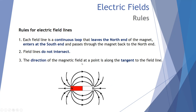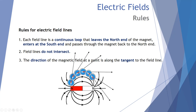Third rule: the direction of the magnetic field at a point is along the tangent to the field line. At any point on a field line, a compass's north pole travels tangent to that line. As we move along the line — at the top the field acts straight to the right, then starting downwards — the direction is always a tangent to the magnetic field line.